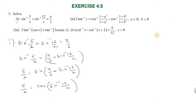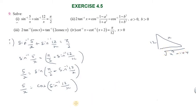For sin⁻¹(12/x), we draw a right triangle where the opposite side is 12 and hypotenuse is x, so the adjacent side is √(x² - 144). Therefore, cos(sin⁻¹(12/x)) = √(x² - 144)/x. So we have 5/x = cos(cos⁻¹(√(x² - 144)/x)).